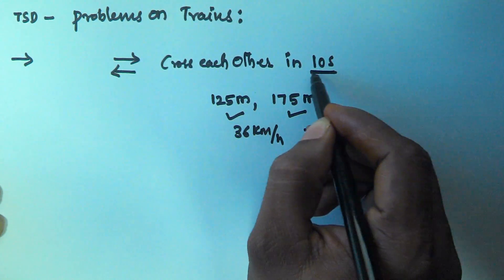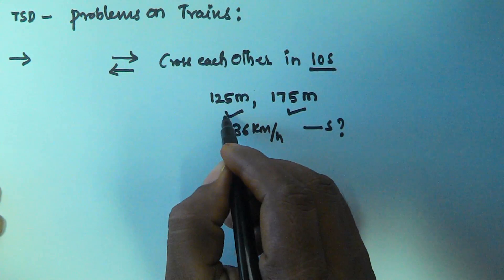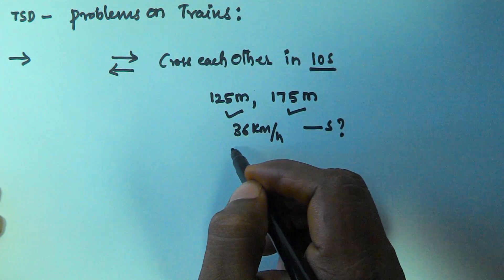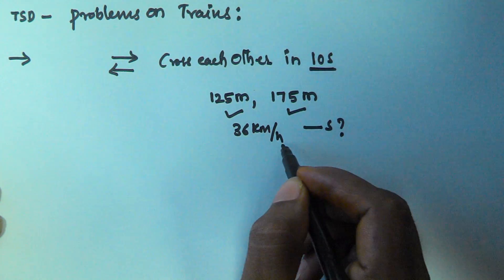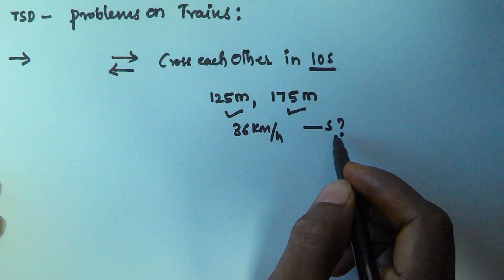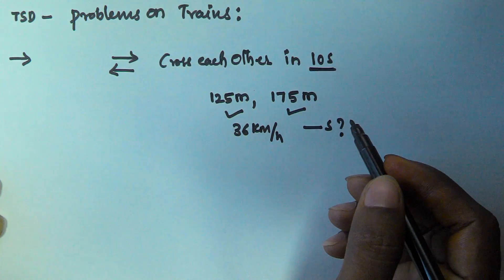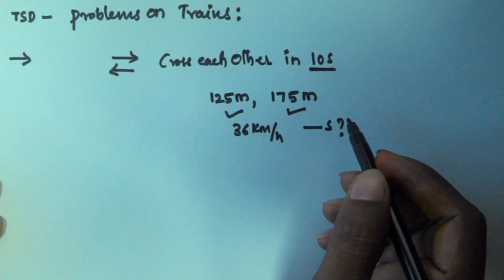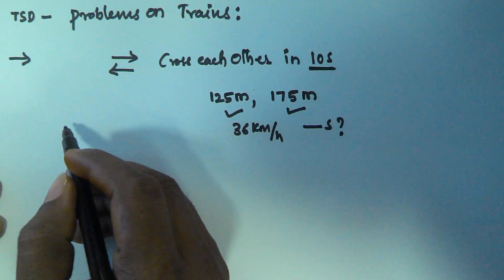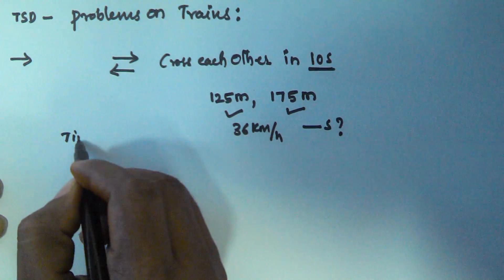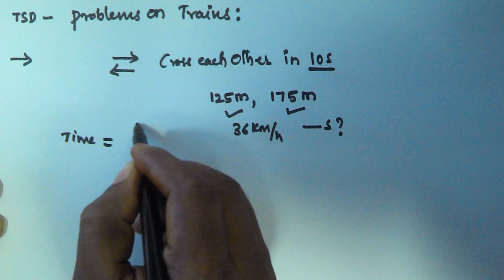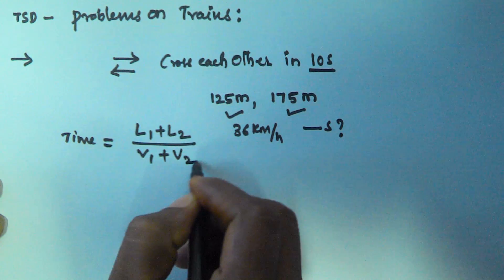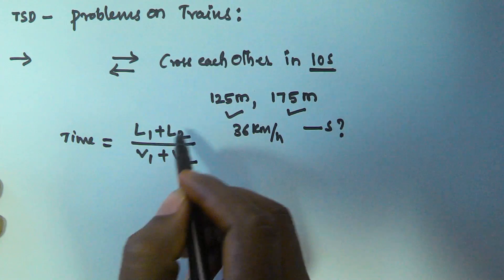The length of the first train is 125 meters and the length of the second train is 175 meters. The speed of the first train is 36 kilometers per hour, so what is the speed of the second train? If two trains are coming in opposite directions, the time to cross is given by (L1 + L2) / (V1 + V2), where L1 and L2 are the lengths of the first and second trains.